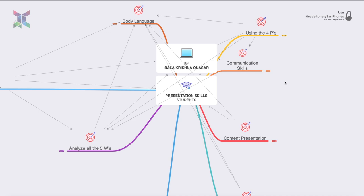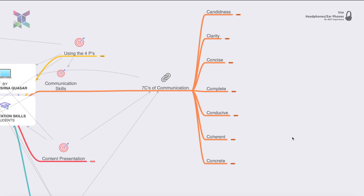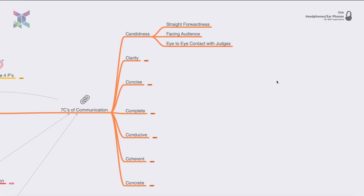Communication skills can be mostly acquired through the seven C's of communication. The first one is candidness — you should be very straightforward with the topic you are presenting to the audience, and you should have eye-to-eye contact with the jury members and audience.